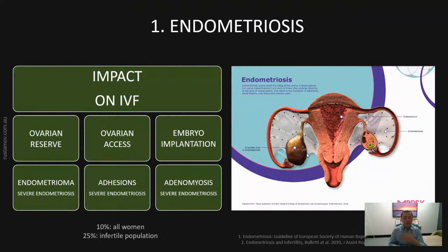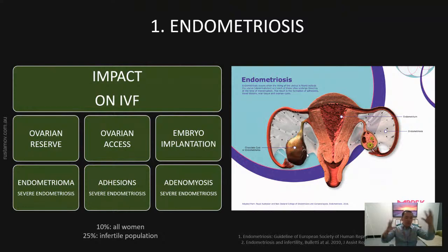Especially the treatment for endometrioma, like surgical removal of endometriotic cysts, can reduce ovarian reserve even further. Also, endometriosis — especially severe endometriosis — may cause pelvic adhesions, which means it can reduce access to the ovaries because the ovary may be located much higher up.